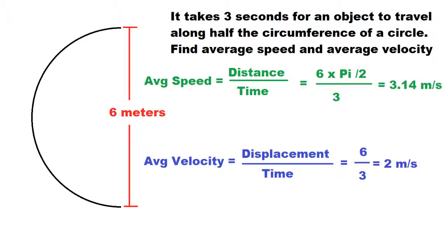So for our final answer for average speed, we get 3.14 meters a second, and for average velocity, we get two meters a second. Hope this video helped explain the difference between average velocity and average speed. Thanks for watching.